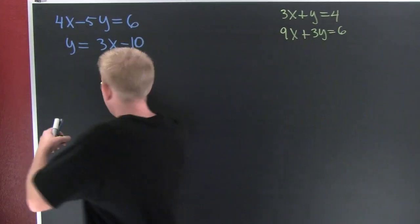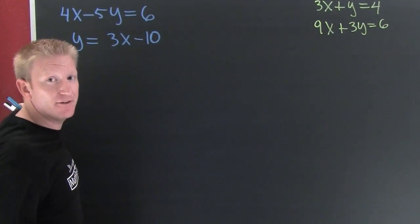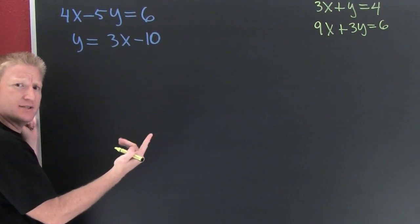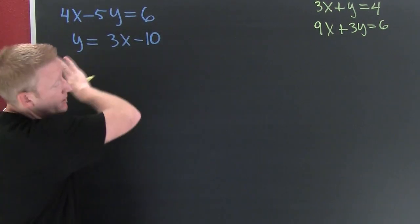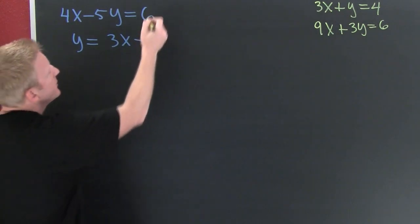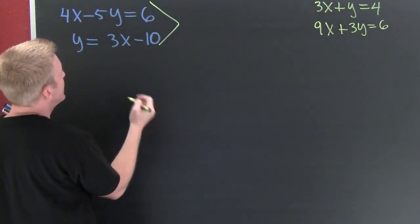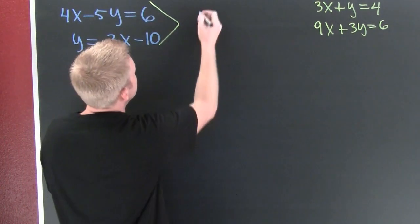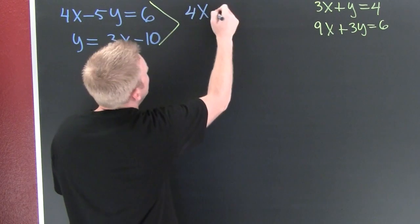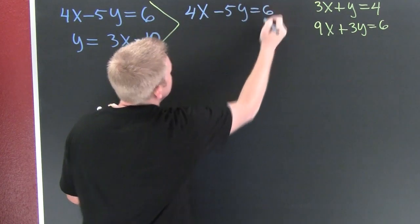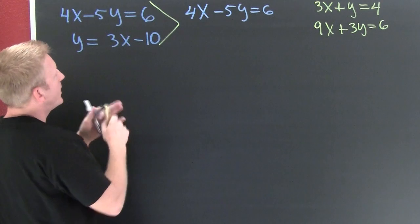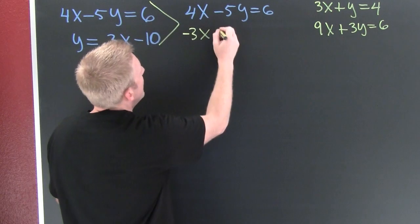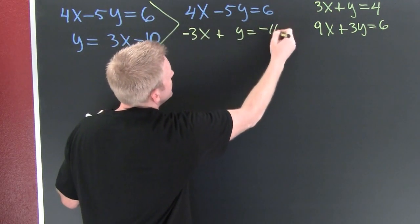First thing I want to do is get it into standard form — my system, my 2x2. I want variables on one side, constants on the other. The top one is already in standard form: 4x minus 5y is equal to 6. And then the bottom one, I need to subtract that 3x off both sides, and I got negative 3x plus y is equal to negative 10.